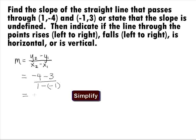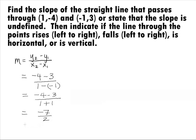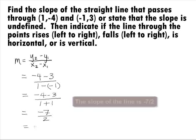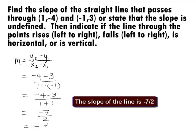This will simplify to be -4 minus 3 over 1 plus 1. This equals a -7 in the numerator over 2 in the denominator. So, our final answer for the slope is -7/2.